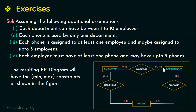In this question it is given that each department must have one phone, meaning all departments will definitely have at least one phone — therefore a total participation. It is also given that each department can have a maximum of three phones. Hence the min-max constraint is (1, 3).